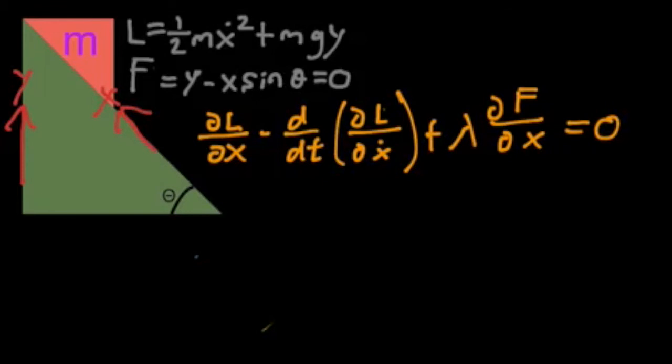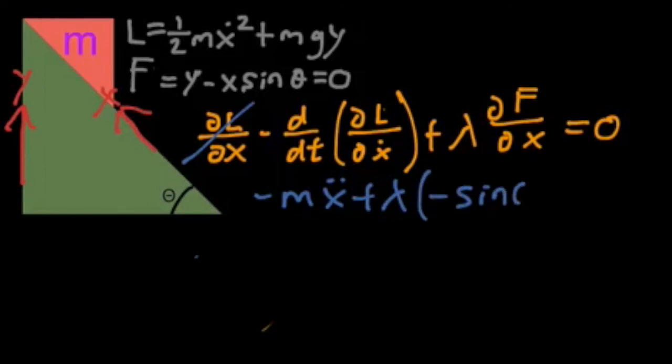So once we solve this, the dL/dx term completely cancels out because the L isn't directly dependent on x. And so we have minus partial L partial x dot is going to be mx dot, because the two comes down and cancels with the one half. And once we take the full derivative of that with respect to time, that's going to become mx double dot, because it's like taking the derivative of velocity, you get acceleration. This is the second derivative of x with respect to time. And then we add lambda times the partial of f with respect to x, which is minus sine theta. And all that equals zero.